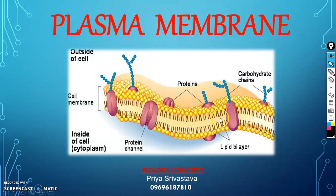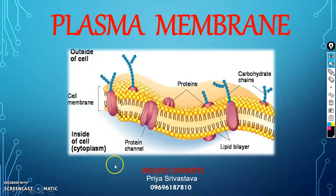This is the biological membrane — you can easily see these are the proteins, this is the lipid bilayer, and these are the carbohydrate chains. This is the cell membrane outside of the cell; inside of the cell is the cytoplasm.